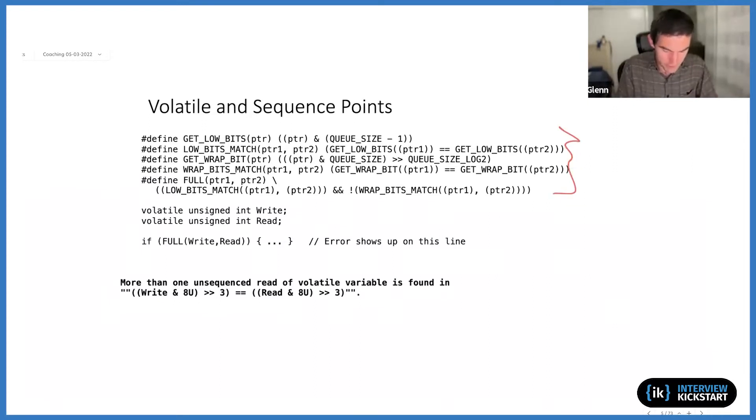And up here, we really just have some macros that define some bit operations. So some ands, some shifting and some equality checks. For the most part, you can kind of ignore the details there. What we do have here is two volatile variables. In this case, one's called write and one is called read.